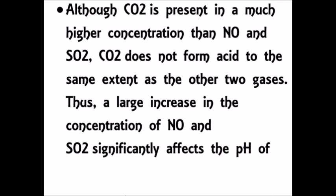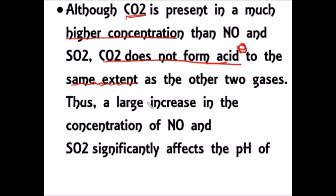Carbon dioxide is present in higher concentration in the atmosphere compared to nitric oxide and sulfur dioxide. The important point is that carbon dioxide does not form acid to the same extent as other gases do — it forms acid, but the quantity formed is very less. Because of that, sulfur dioxide and nitrogen dioxide affect the pH of rainwater significantly.